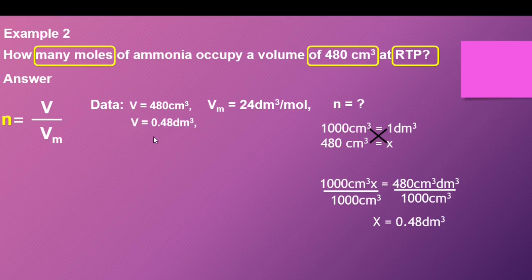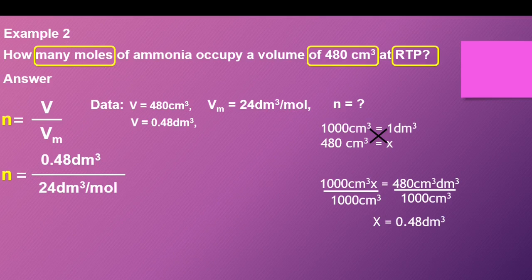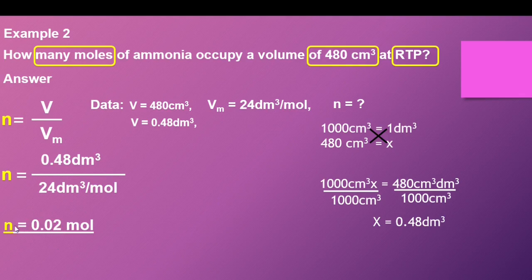So our volume is V equals 0.48 cubic decimeters. Substituting: N equals 0.48 cubic decimeters divided by 24 cubic decimeters per mole. The cubic decimeters cancel, and the mole comes to the top, giving us units of moles. Therefore, the number of moles equals 0.02 moles.